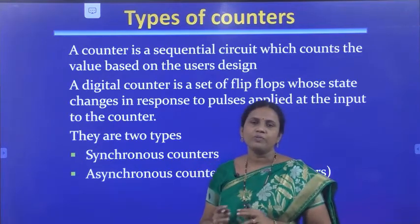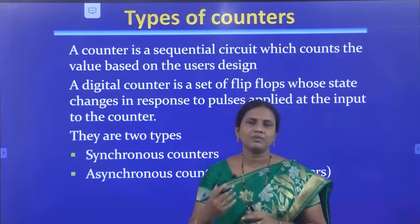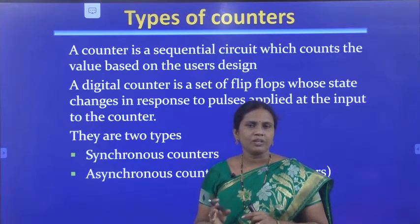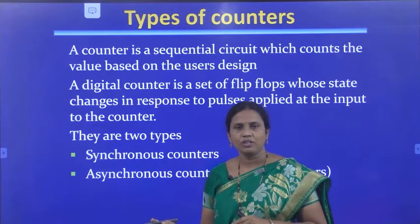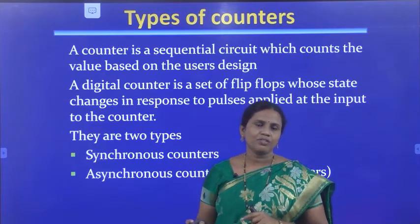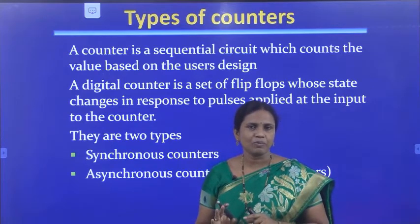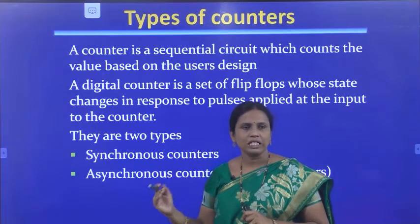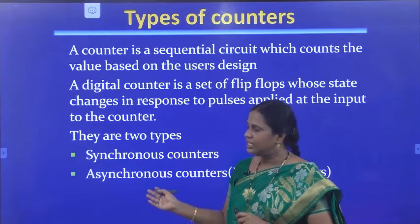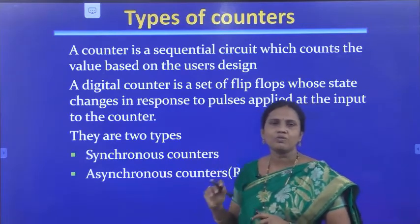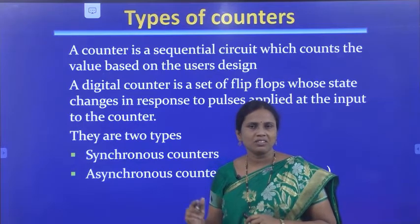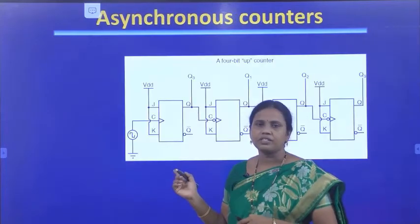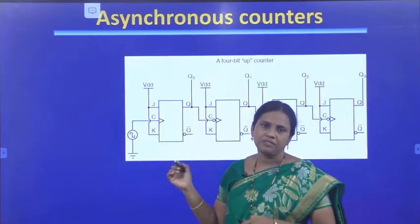Based on the clock pulses given to the flip-flops, counters are classified into two types: synchronous and asynchronous. In synchronous counters, the same clock pulse is given for all the flip-flops. In asynchronous counters, the clock pulse is given only for the first flip-flop, and then the output of the previous flip-flop is given as clock pulse to the next flip-flop. The asynchronous counter is also called a ripple counter.